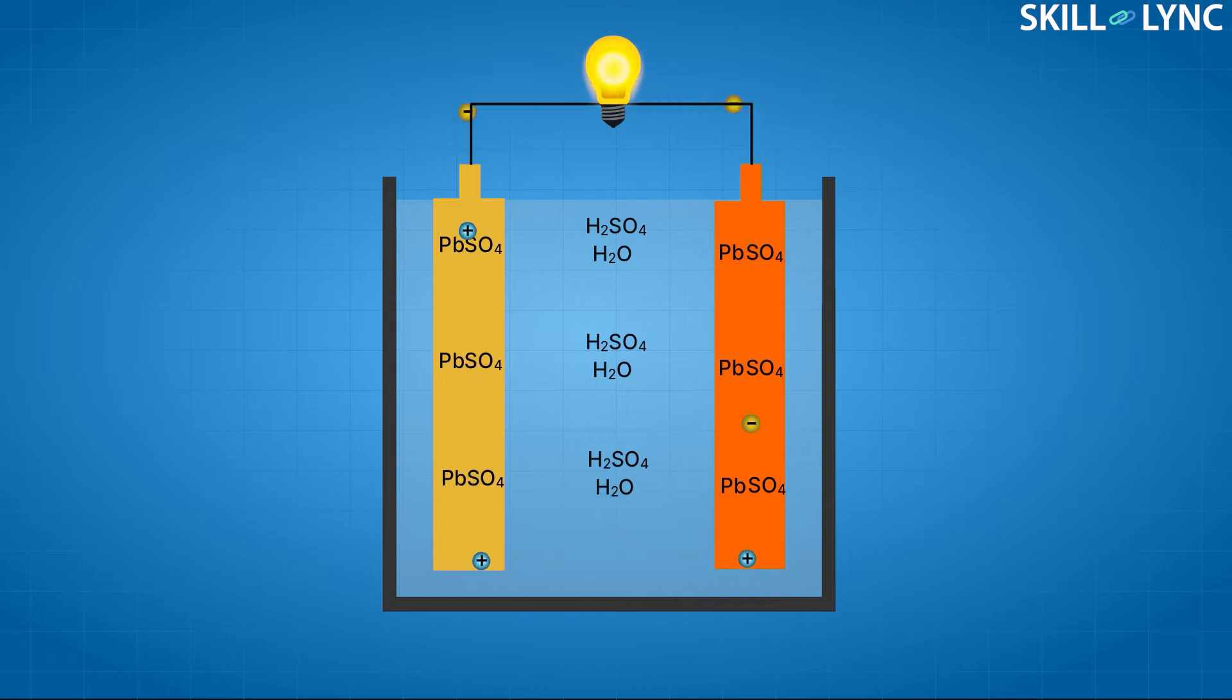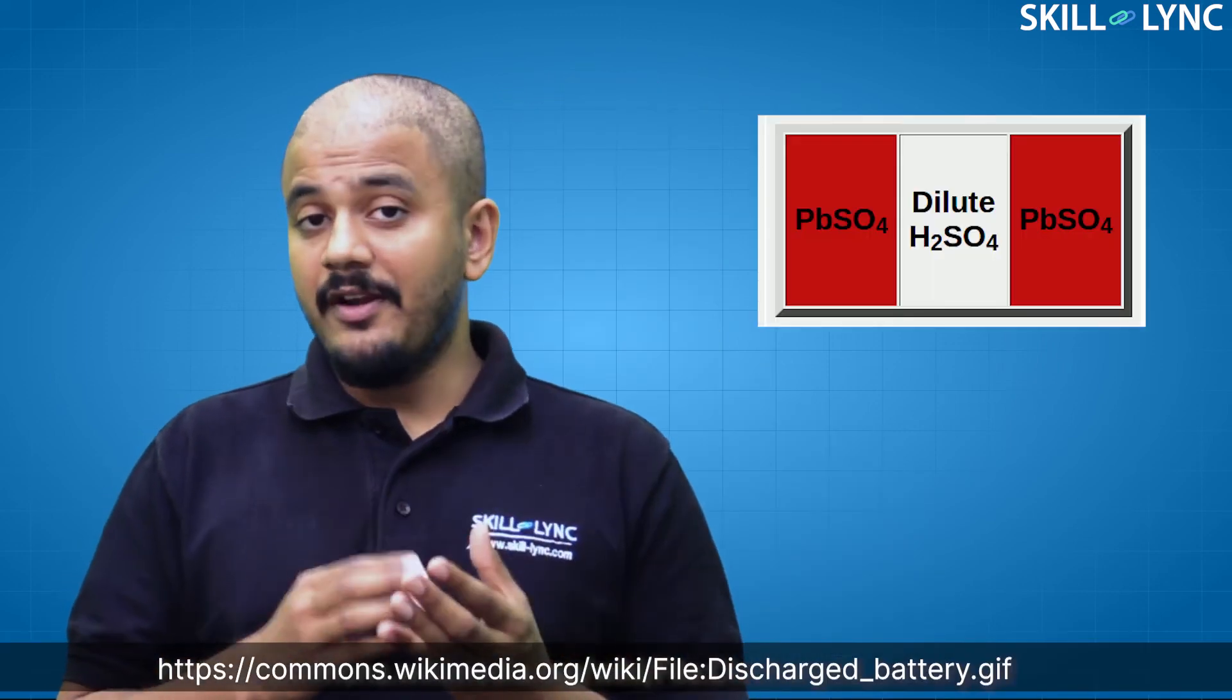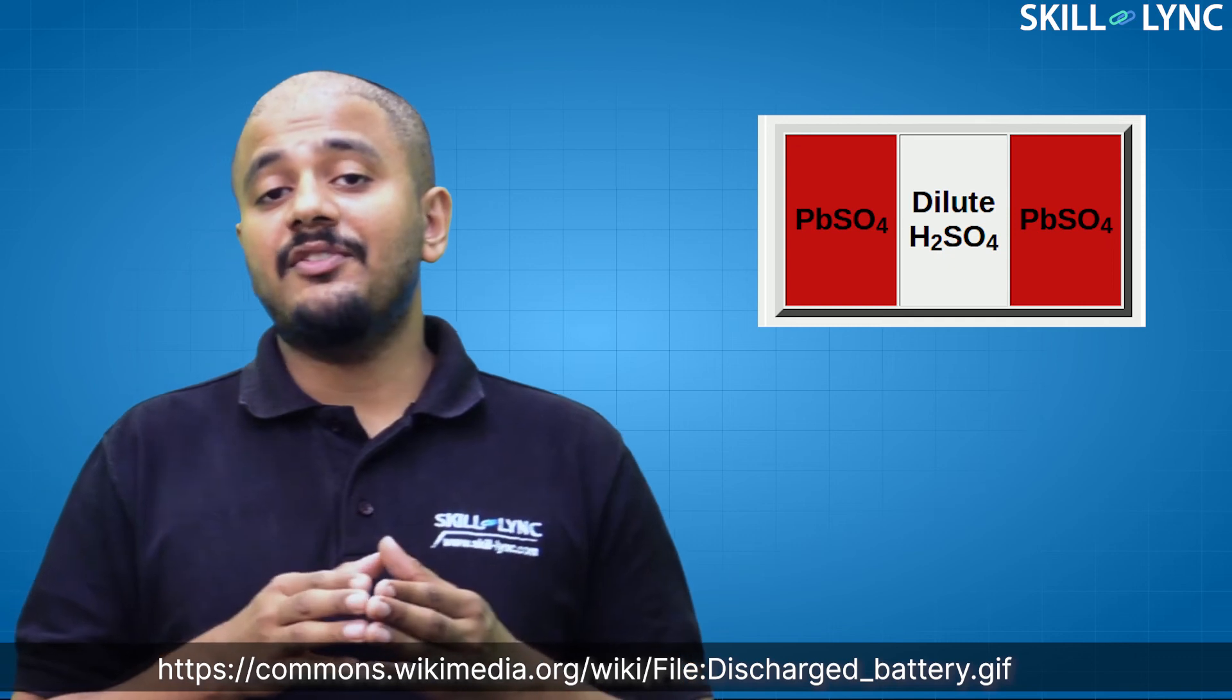When the battery is connected to an external circuit, the electrons in the negative terminal rush towards the positive terminal through the external circuit, thus inducing current. When the positive and negative electrode is covered in sulfate, no more reactions can take place.